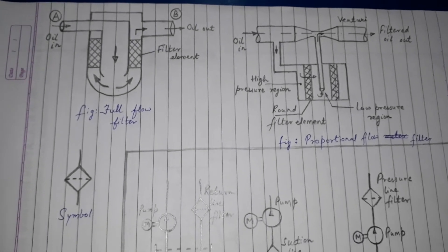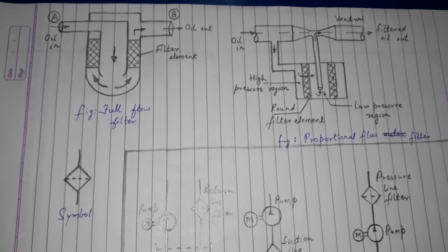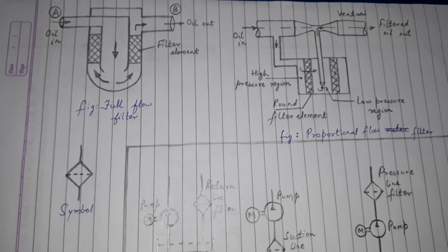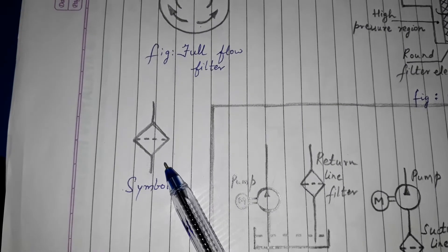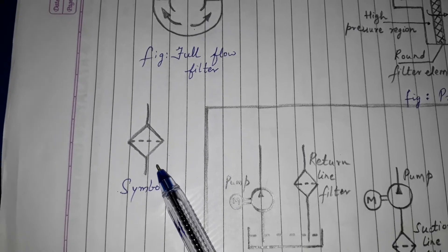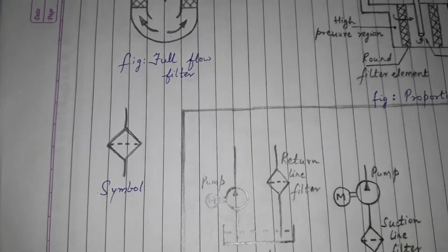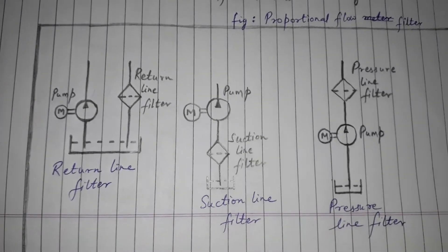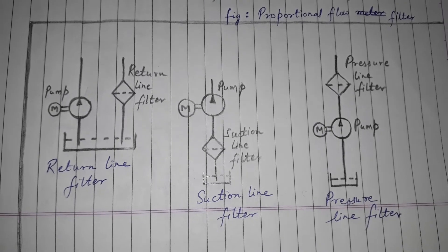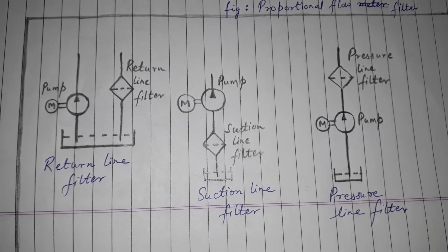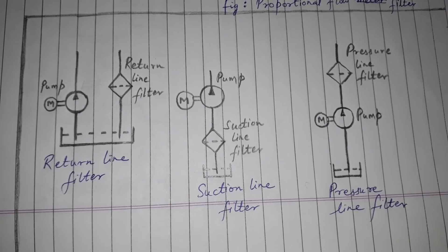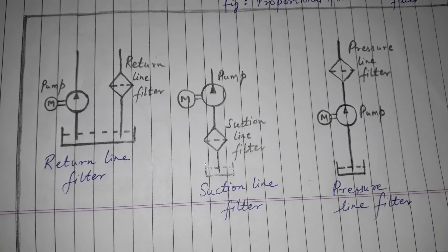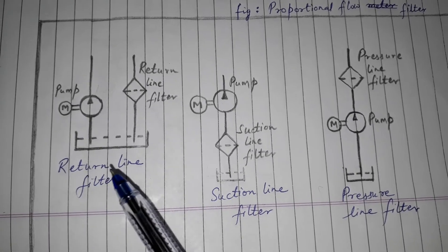The filtration material may be felt, paper, fabric, or wire mesh. This is the symbol of a filter. Regarding the location of the filter, it can be placed at three suitable locations in a hydraulic circuit.